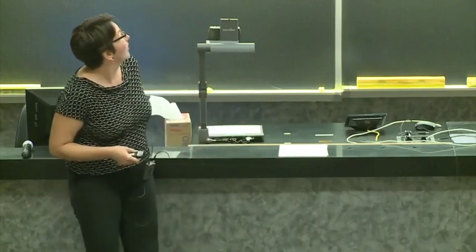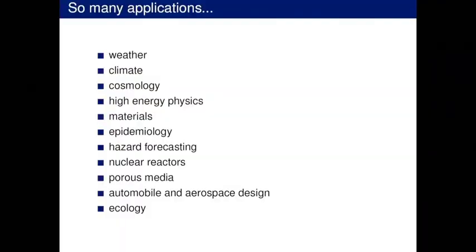In the last talk, we saw great examples of applications where we do uncertainty quantification — weather, climate, studying the universe, high energy physics, nuclear physics. I myself have worked quite a bit on hazard forecasting, and often questions of design and materials. What these have in common is that they are hard problems where data is typically either quite limited, quite expensive, or doesn't exist. For volcanic hazards, to get data we have to sacrifice a graduate student to a volcano — it's not trivial.